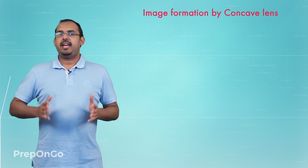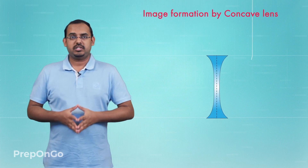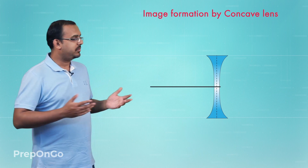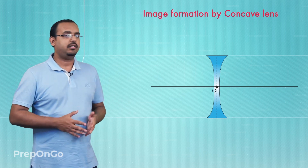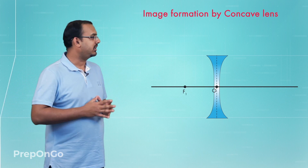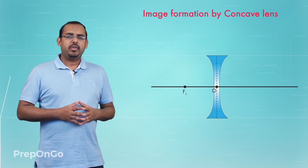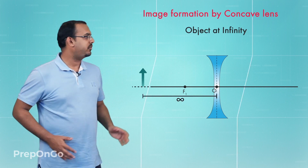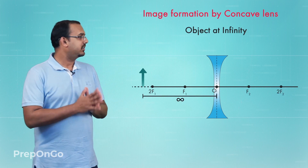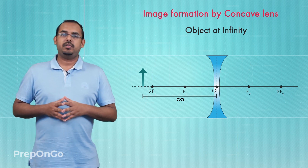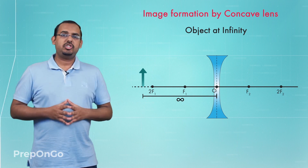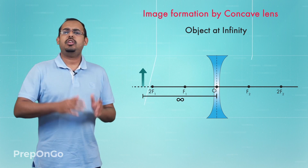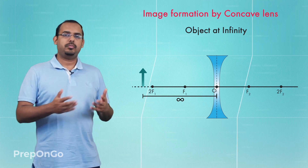Let us study about the first image formation case. Here we have a concave lens and we have marked the principal axis, the optical center, and the principal focus of the concave lens. In the first case we'll place the object very far away from this concave lens — in other words, the object is at a position which is at infinity with respect to the concave lens.